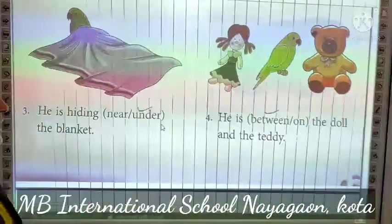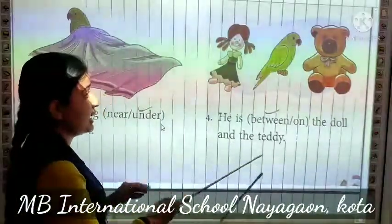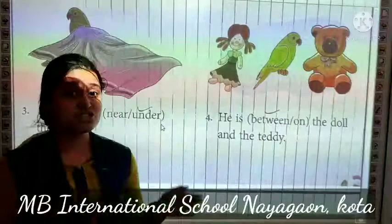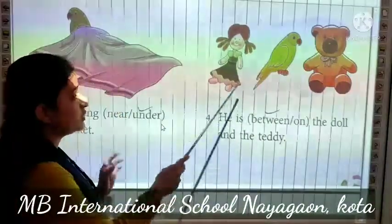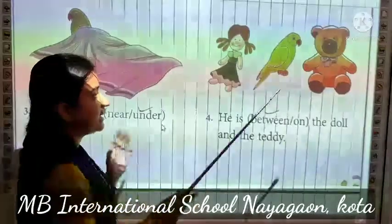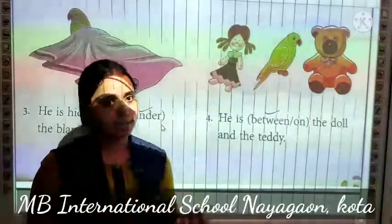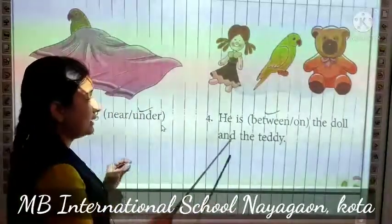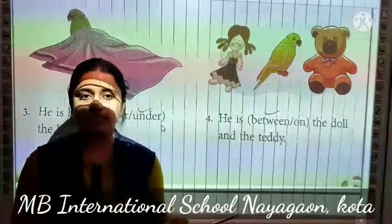Now next, he is dash the doll and the teddy. Joh Parry hai woh between hai ya on hai — between means beach mein, on means upar. Picture mein joh Parry hai woh doll or teddy ke beach mein hai. Toh haam between prepositions ka use karenge. He is between the doll and the teddy, joh Parry hai woh doll or teddy ke beach mein hai.